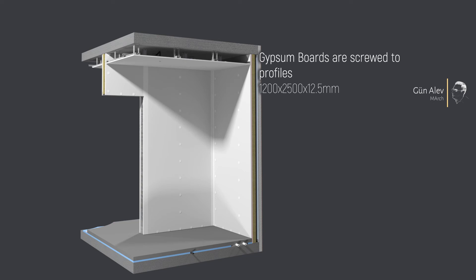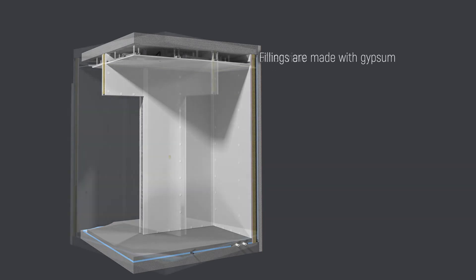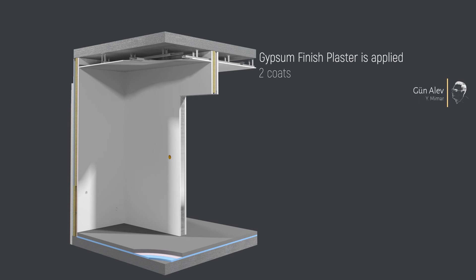Gypsum boards are screwed to the ceiling. Joint tapes are adhered and gypsum fillings are made. Gypsum finish plaster is applied and primer is applied.